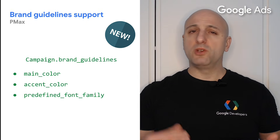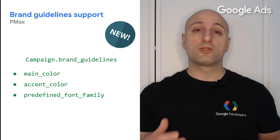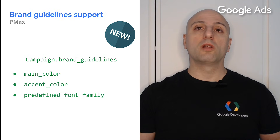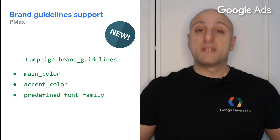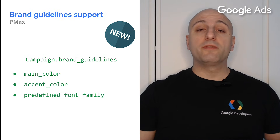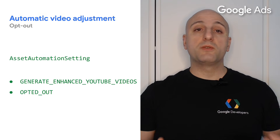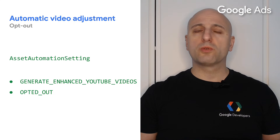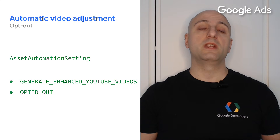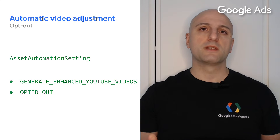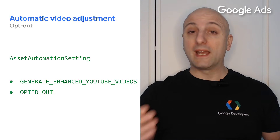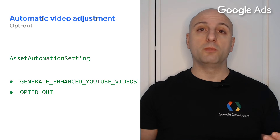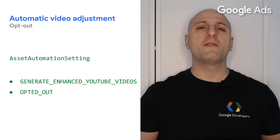There are also new fields to provide guidelines on how a brand should be used in automated assets, such as the main color, the accent color, and the font family. Additionally, there is a new flag in v19 that allows users to opt out of automatic video asset adjustment. If you don't want Google Ads to automatically flip the orientation of video ads or shorten them to highlight key moments, set the asset automation setting with type generate enhanced YouTube videos in a Pmax campaign to the value opted out.